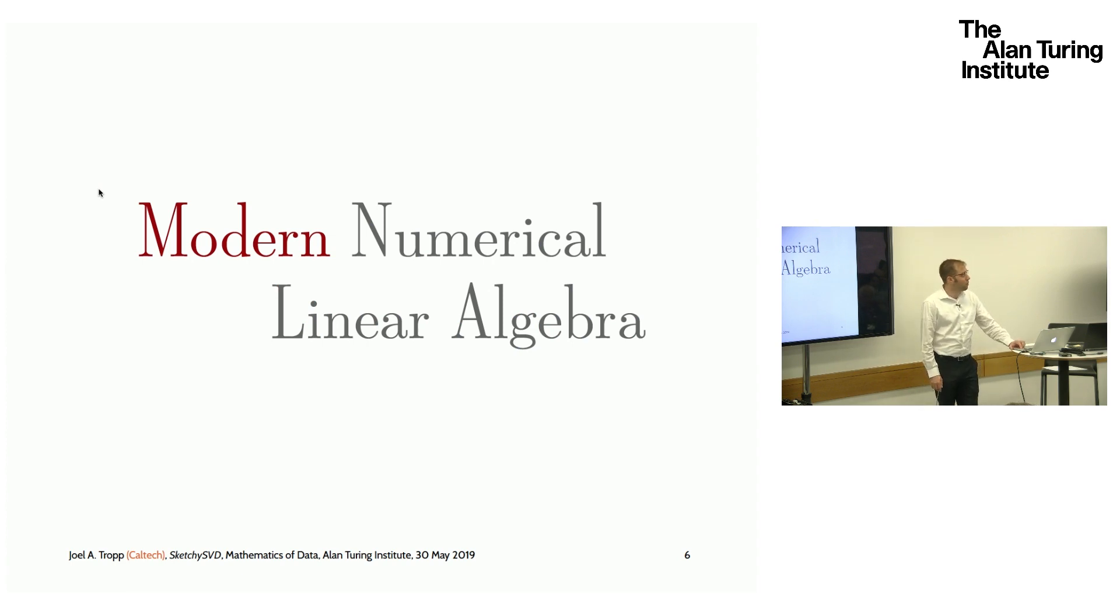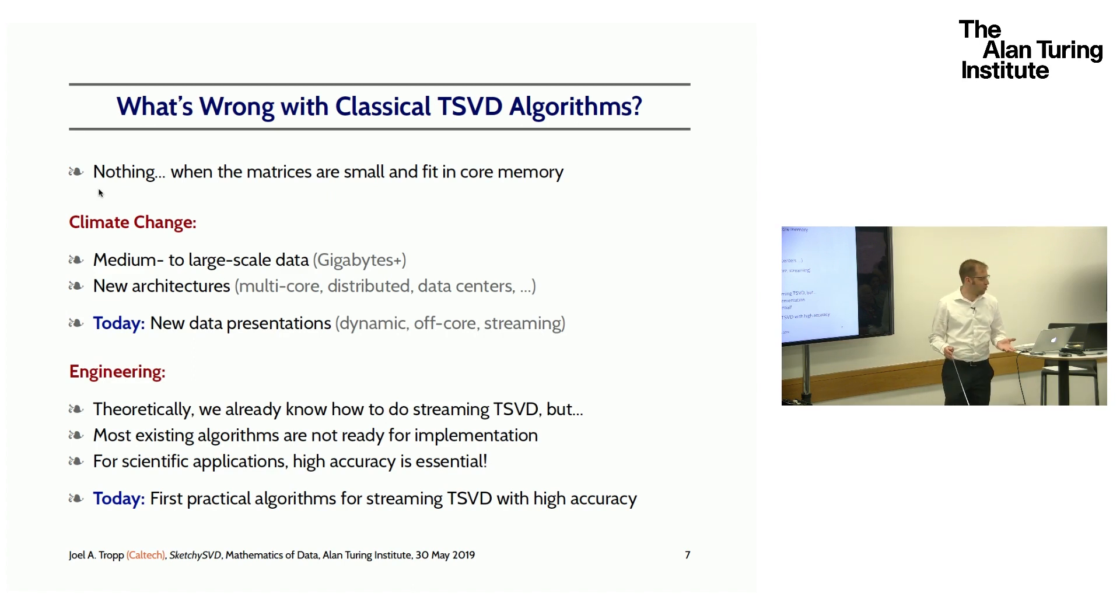I'm going to be telling you about some modern trends in numerical linear algebra around the computation of truncated SVDs. We should begin with a question: what's wrong with classical algorithms for computing the TSVD? The answer is that there's nothing wrong with these algorithms when the matrices are pretty small and fit in core memory. On the other hand, we've experienced some climate change in recent years. When I first had a computer, it had 64K of RAM and 540K floppy disks. And now data is a little bigger.